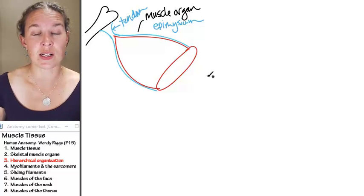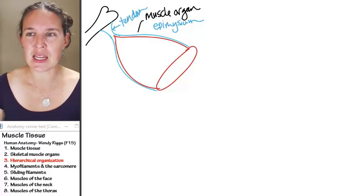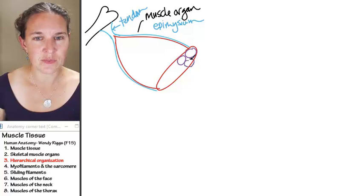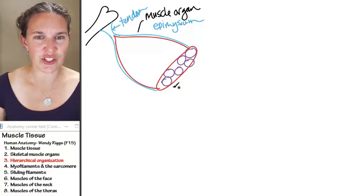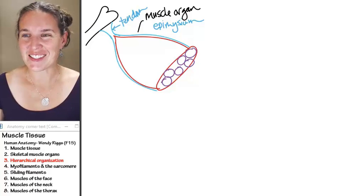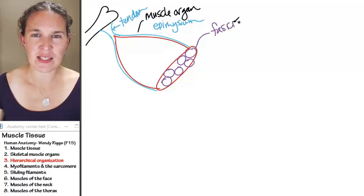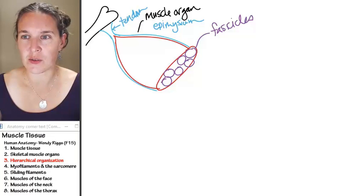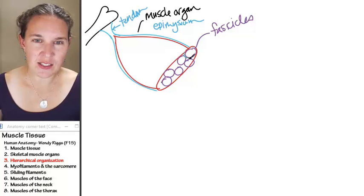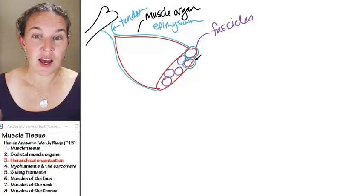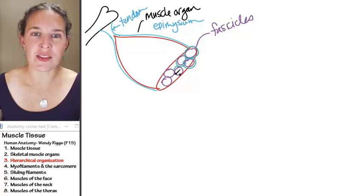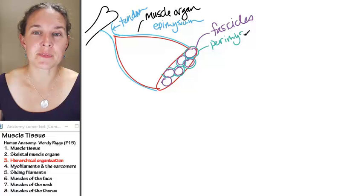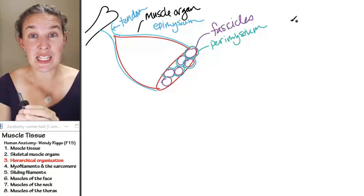Now, the muscle organ is made of these structures called fascicles. So if you were to do a cross section of a muscle organ, you would see these circular fascicles. And the fascicles, let's just name them fascicles. The fascicles are surrounded by their own connective tissue covering. So each fascicle is surrounded by a connective tissue. It's not epi on the outside and it's not endo on the inside. So that gives you a hint to what we're looking at here. This is actually called perimysium.